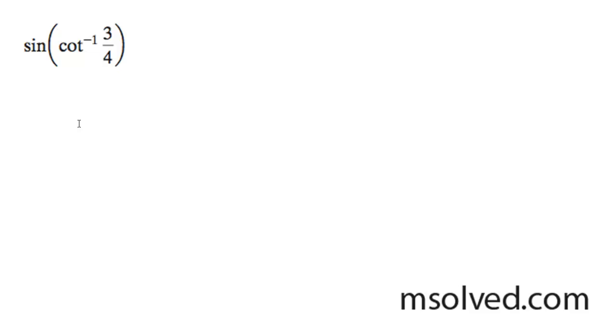Let's find the sine of the inverse cotangent of 3 over 4. And what we can do here is a little bit different. Cotangent inverse of 3 over 4 is equal to x. Let me rewrite this as cotangent of x equals 3 over 4.